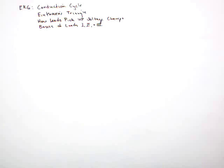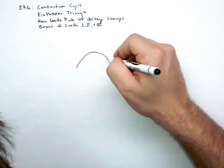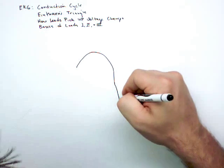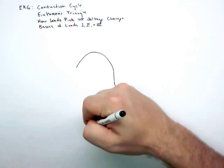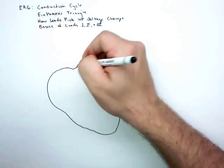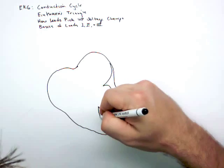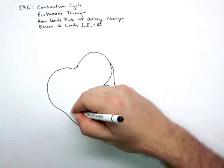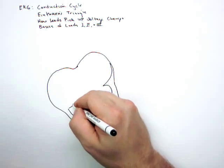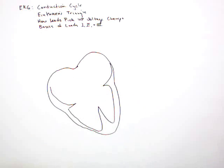The first thing we need to do is go through the conduction cycle. Depending on how you've learned this before, the steps might be a little bit different, but they're different now because you need to have all these steps included to understand every deflection. For example, most people don't include septal depolarization. It's just kind of a generic description, but we're going to need septal depolarization because it's necessary to explain the Q wave.